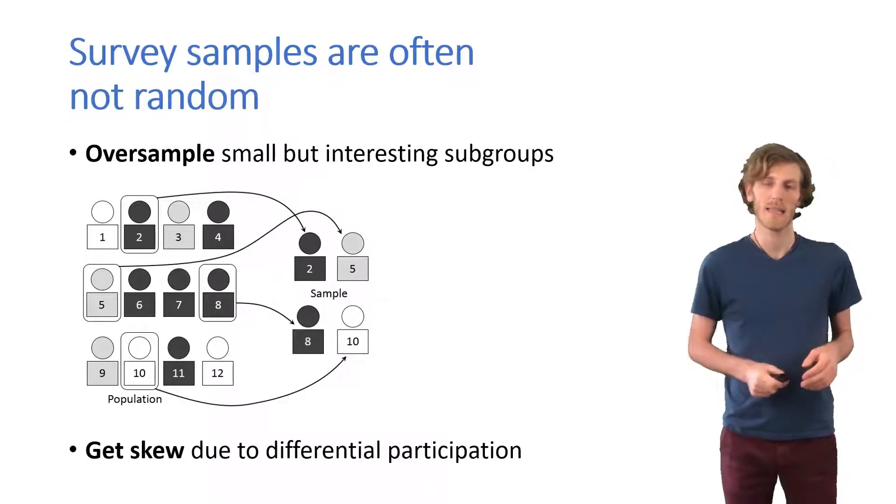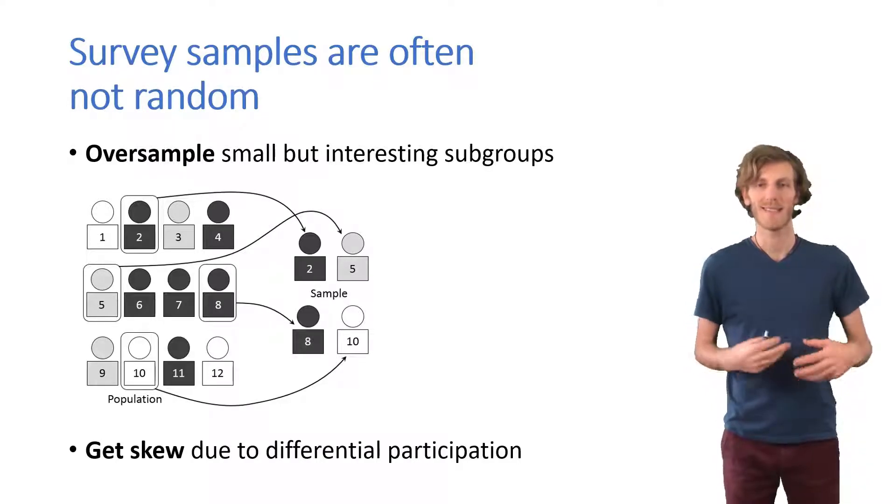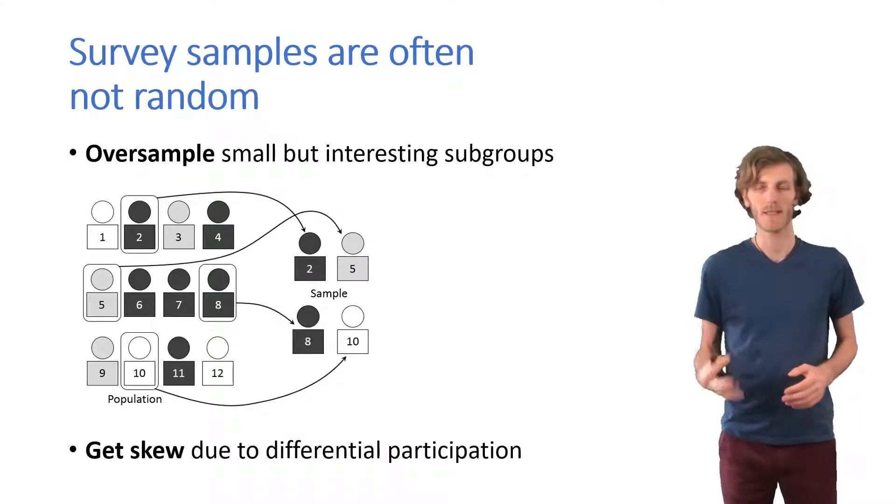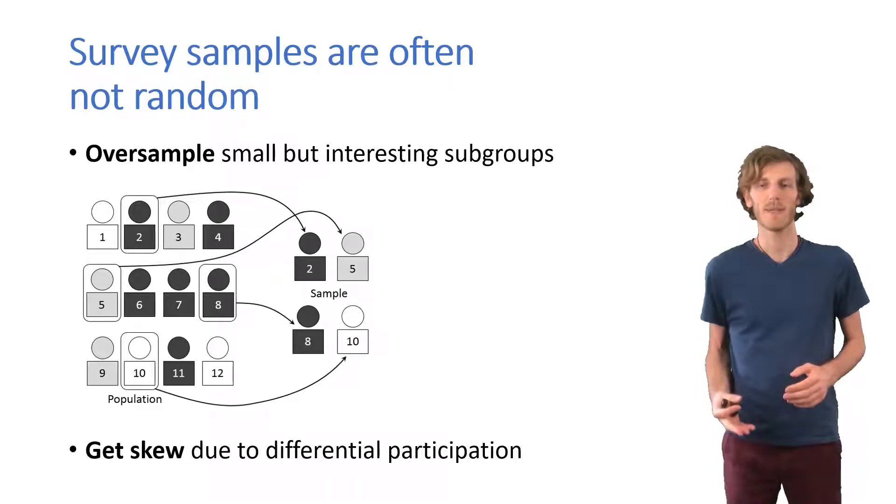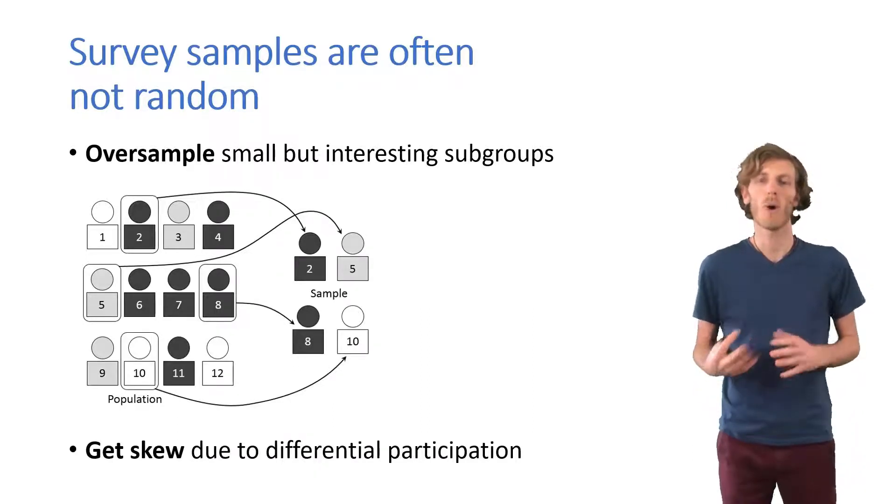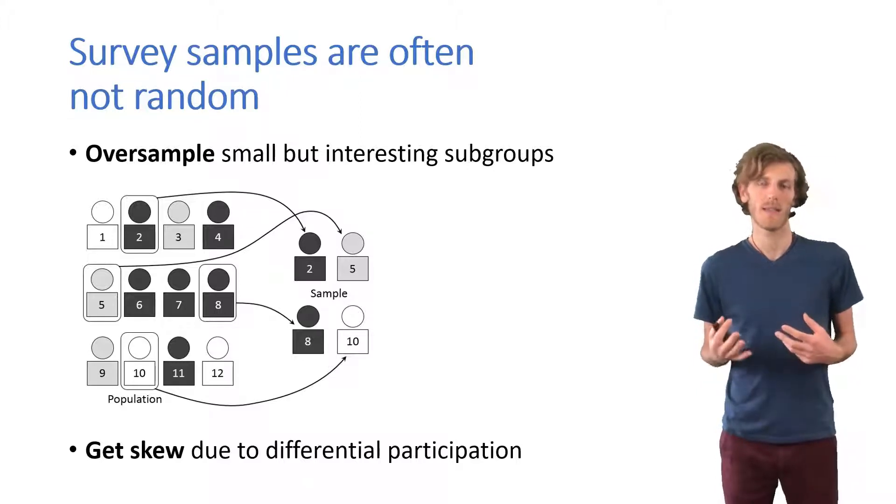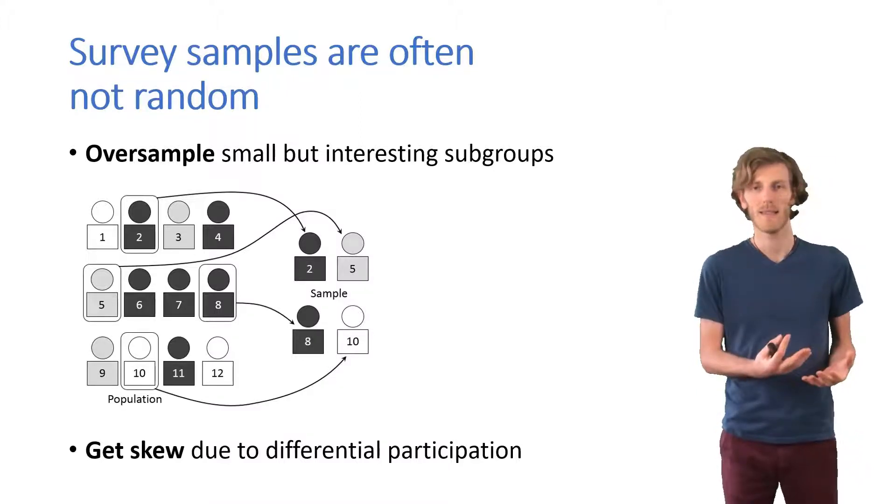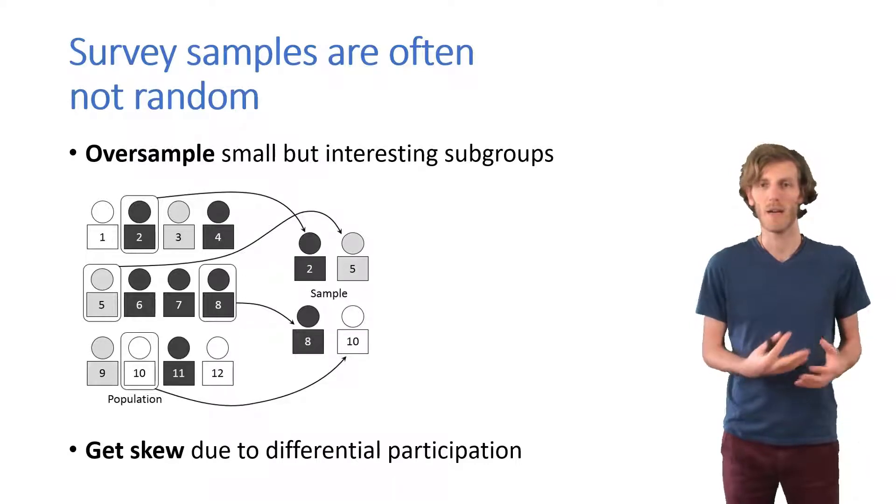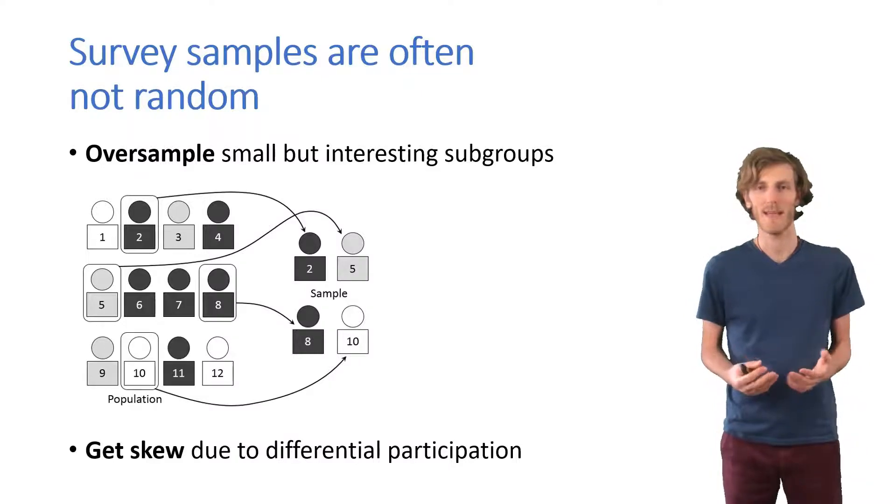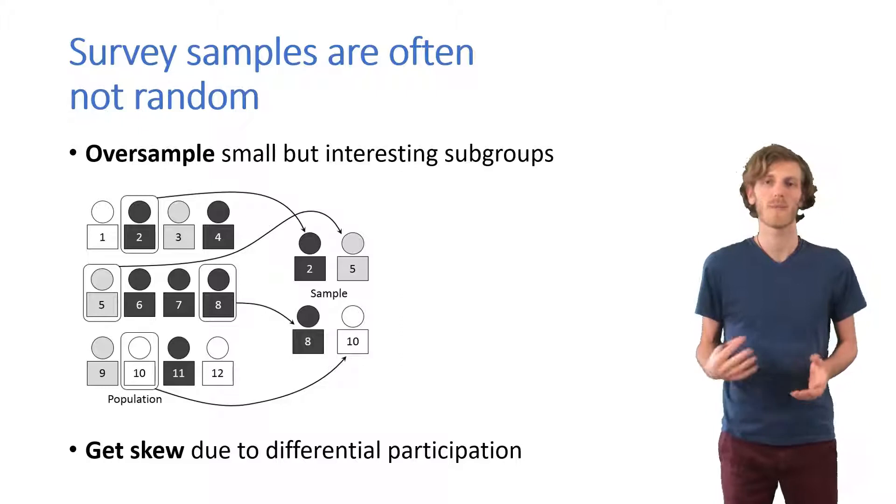Conversely, our sample might cease to be random during the data collection process if some participants are systematically more or less likely to participate than others. In that case, our white characters in this population might just really not want to participate in the survey so that we end up with too few of them and then again we need to consider weighting the data to correct for that.